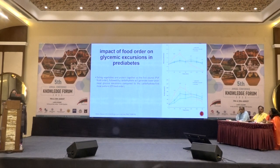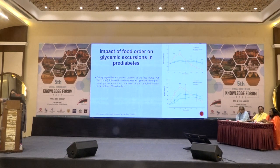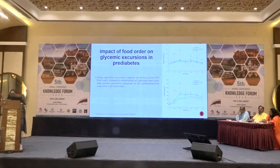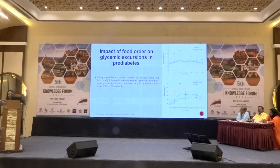The impact of food order is also very important for glycemic excursion in pre-diabetics. Normally we focus on carbohydrates first, then fibers and proteins. But the most important approach is the PVF food order — protein and vegetables first, followed by carbohydrates. This generates a lower post-meal glucose excursion compared to a carbohydrate-first meal pattern. We must educate diabetic patients to eat salad first, then dal, paneer, or dahi, wait 10 minutes, and then start with carbohydrates. That 10-minute period helps control glycemic excursions.